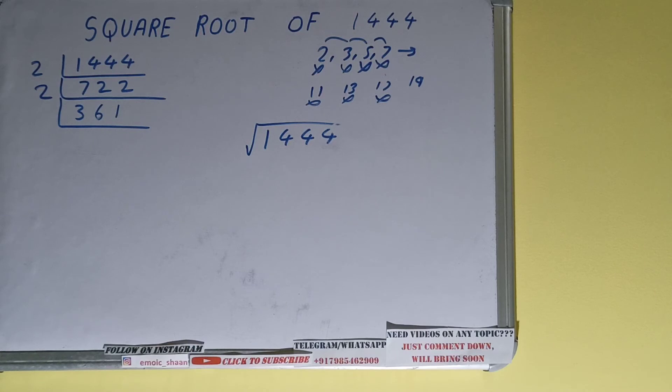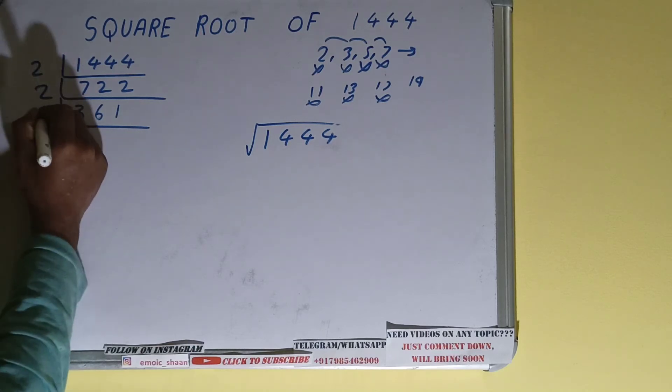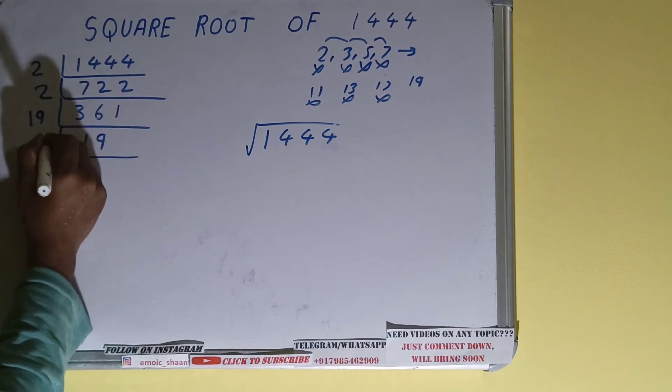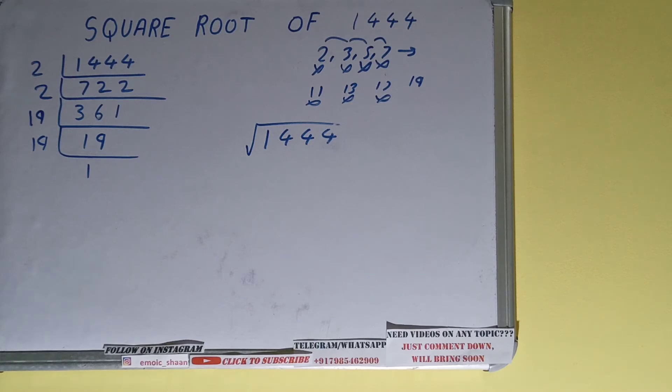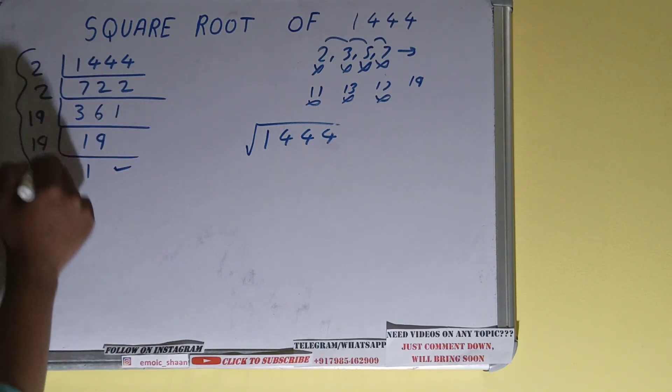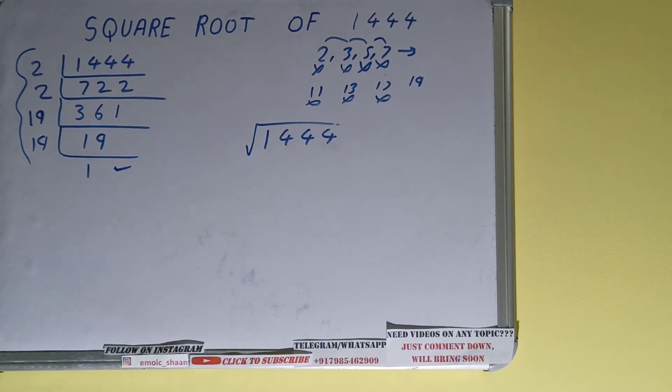19 ones are 19, 19 twos are 38, 19 nines are 171. Yes, it is divisible. So divide and you'll be having 19. 19 is again divisible by 19, divide you'll be having 1. Once you get 1, you need to stop, and whatever you have on the left-hand side is the set of prime factors for the number 1444.